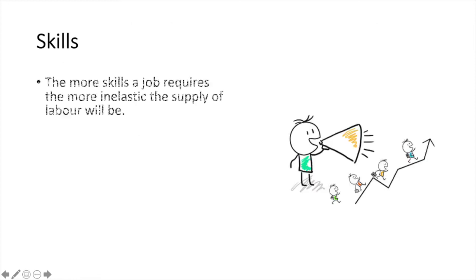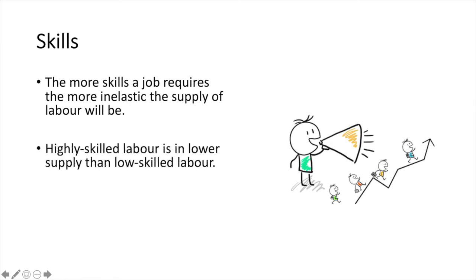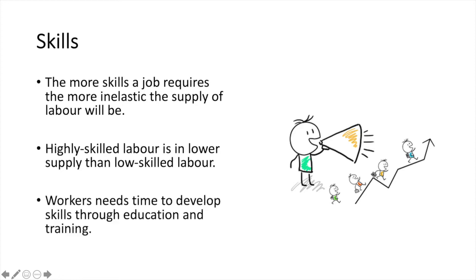The more skills a job requires, the more inelastic the supply of labour will be. Highly skilled labour is in lower supply than low skilled labour, and workers need time to develop skills through education and training. Think specifically about professional athletes — the skill required for their occupation is so high and requires so much training that simply increasing the wage rate would not suddenly make a new pool of labour available.